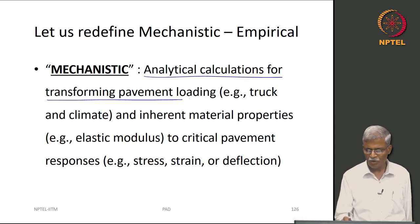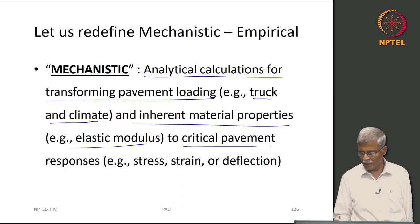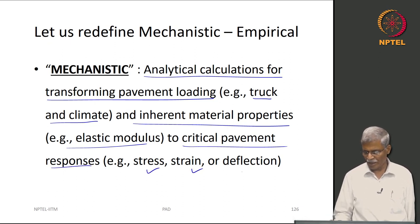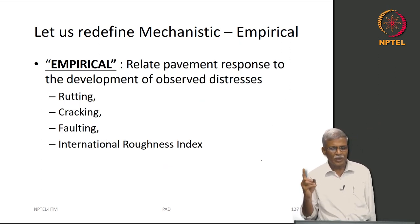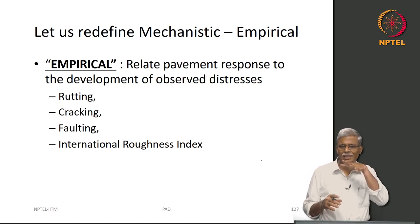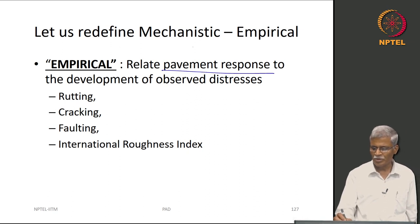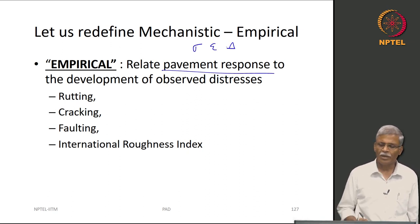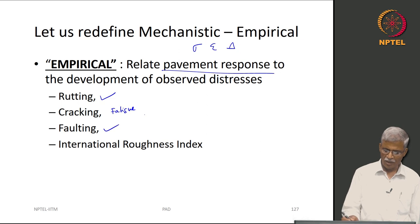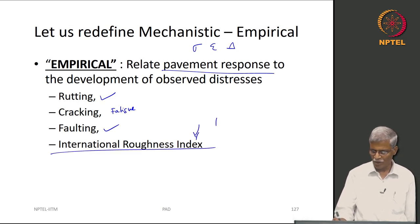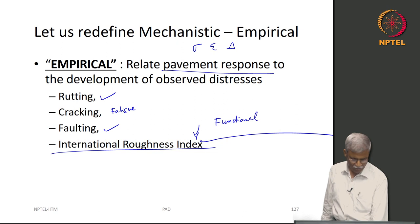Let us redefine mechanistic and empirical. Mechanistic refers to analytical calculations that transform pavement loading — truck and climate — along with inherent material properties into critical pavement responses: stress, strain, or deflection, with no damage yet at this stage. Empirical is where things become slightly fuzzy — it relates the pavement responses of stress, strain, and deflection to observed distress such as rutting, fatigue, faulting, and IRI, the latter coming more from the functional side.